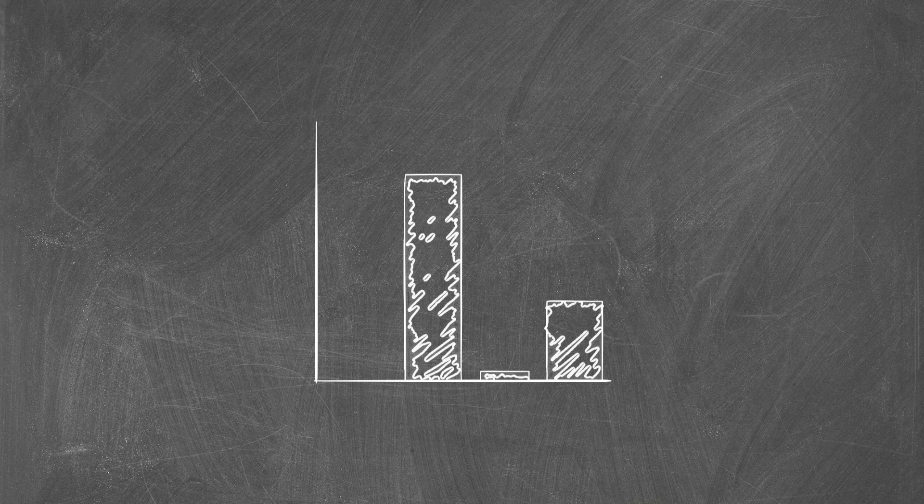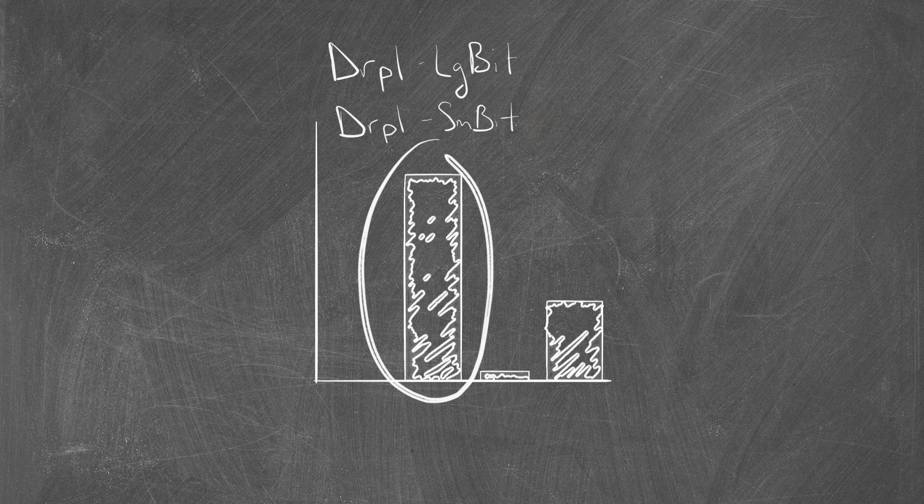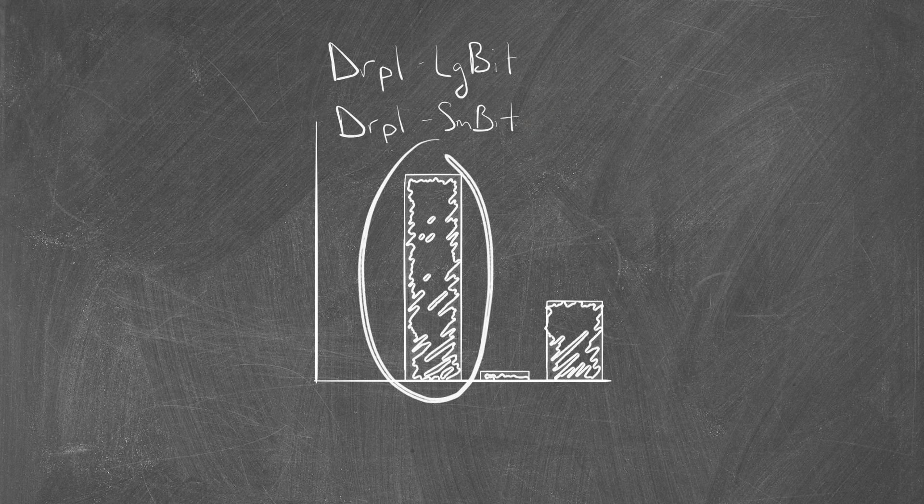Assaying luminescence in HeLa cells, DRP1 small bit co-transfected with DRP1 large bit resulted in the highest signal, as expected from a protein that forms homo-oligomers.